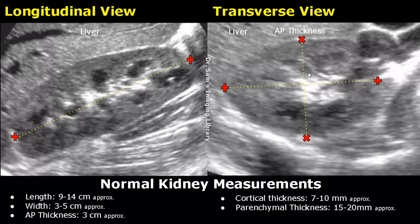The AP thickness can be measured by placing the calipers as shown. The AP thickness is around 3 centimeters.